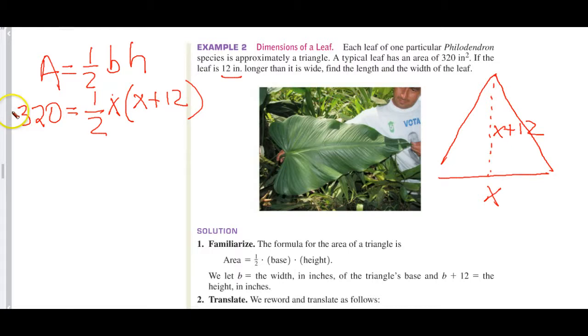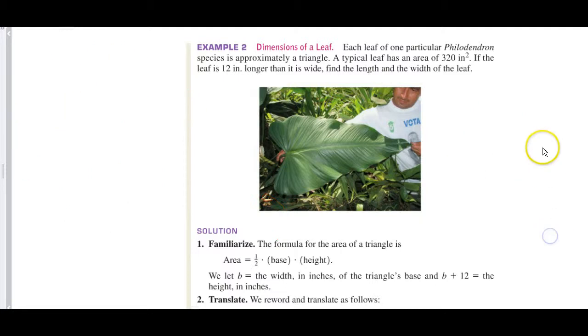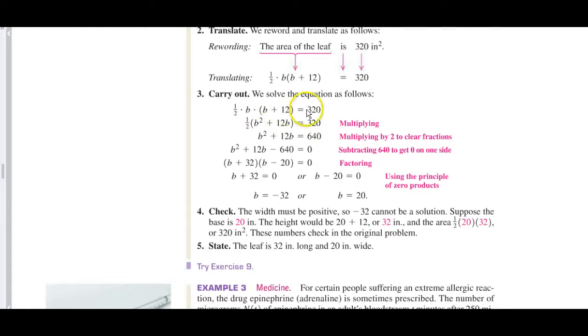Now, if I go through solving all of this, the tape is going to be quite long. Again, all of the work is there. But what we want to do is do a strategy in converting English into algebra. But to solve this, I would multiply both sides by 2, and then I would get 640 = X² + 12X.